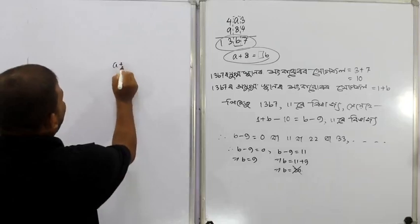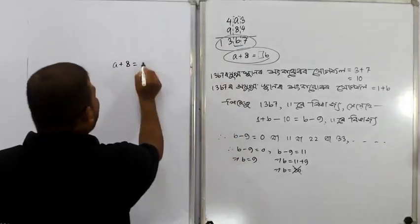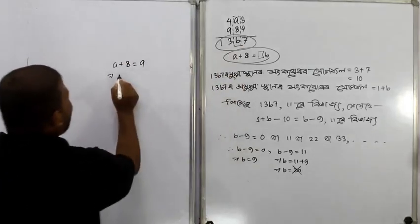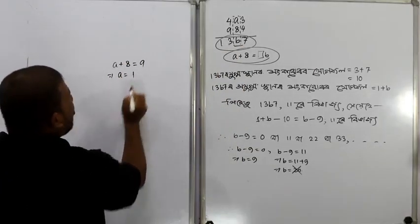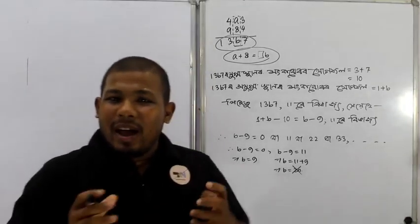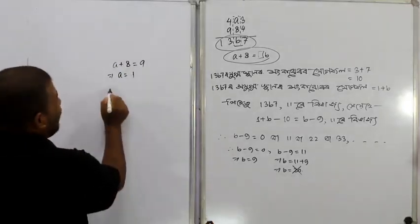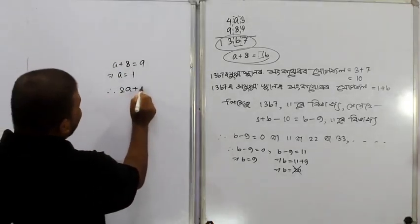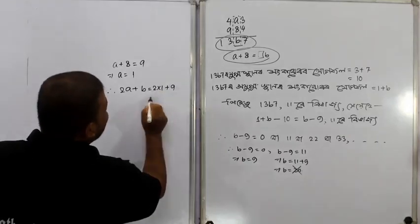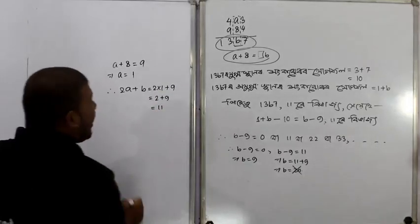A plus 8 equals A, so directly the b value equals 9, so that A equals 1. If A equals B, then A equals B equals 1. Therefore, twice A plus B equals 2 times 1 plus 9, which is 2 plus 9, equal to 11.